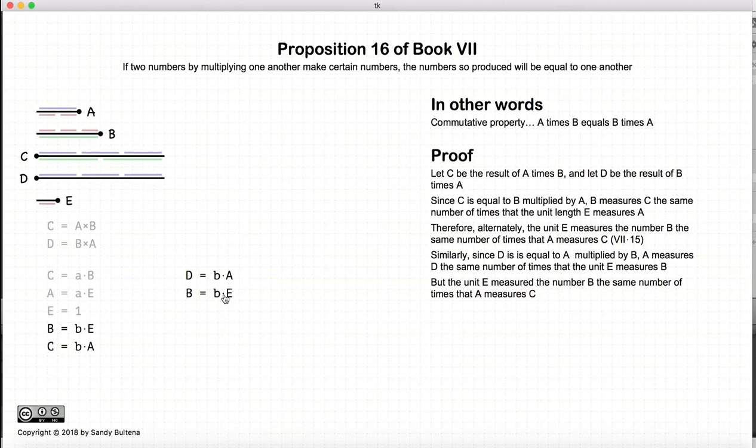But let's look. We have that the unit e measures b the same number of times that it measures a and the same number of times that it measures c. So we have that d is equal to a measured b number of times and c being measured the same number of times. These two are equal. So therefore, c equals d.